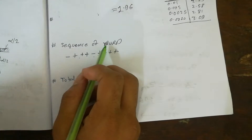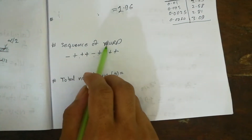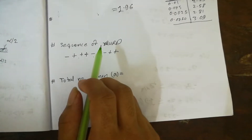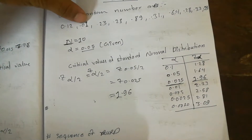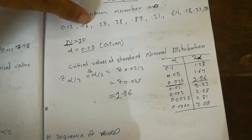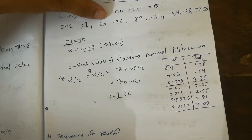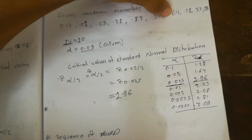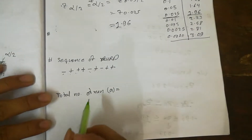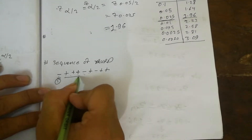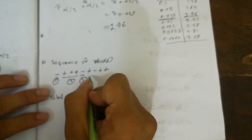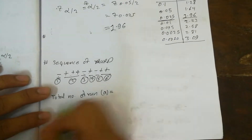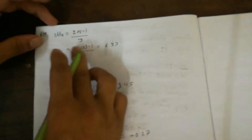Now we identify runs up and runs down. Starting from the first value, if the next value is smaller we mark minus, if larger we mark plus. Going through the sequence, we get the signs: −, +, +, +, −, and so on. Counting the runs: run 1, run 2, run 3, run 4, run 5, run 6. The total number of runs a = 6.